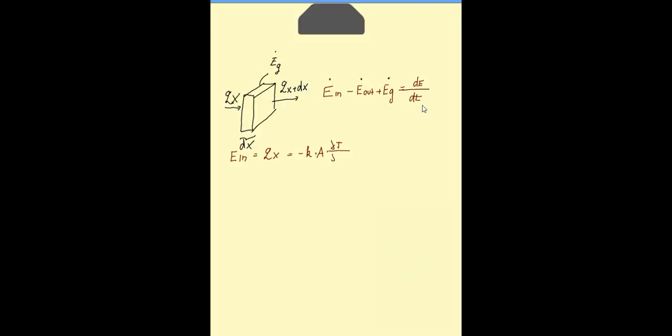We can write it in the form of Fourier's law. We use a partial derivative for the temperature gradient in x direction because the temperature could be changing in y or z direction as well.